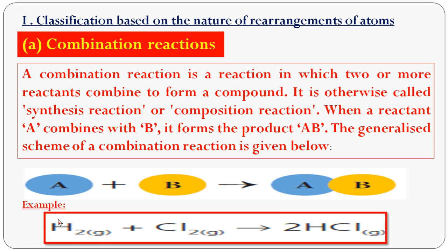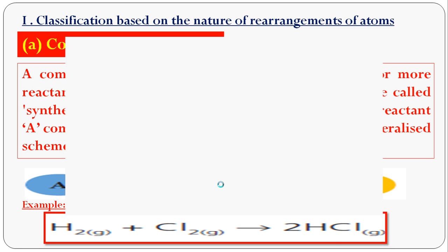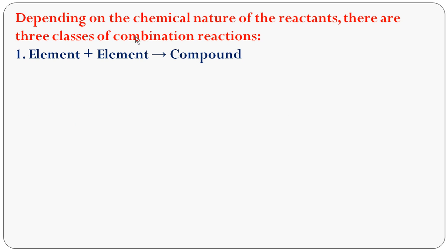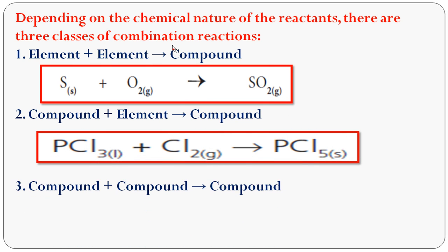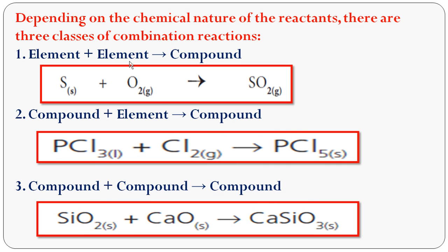For example, hydrogen gas reacts with chlorine gas to form hydrogen chloride gas. To balance it: 2 H₂ + 2 Cl → 2 HCl. Depending on the chemical nature of the reactants, there are three classes of combination reactions. The first class is element + element → compound. For example, sulfur (an element) reacts with oxygen to form sulfur dioxide — element + element forming a compound.